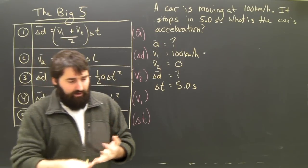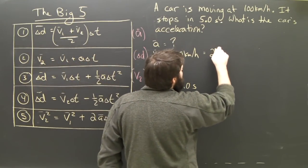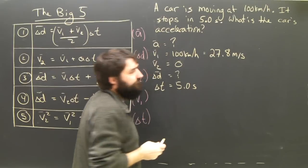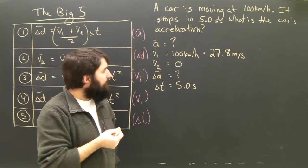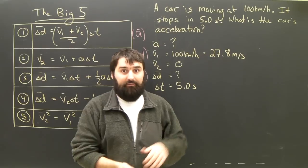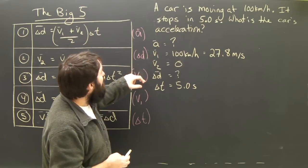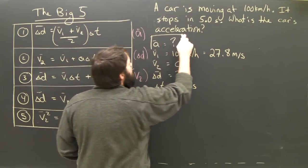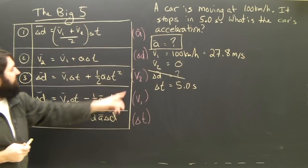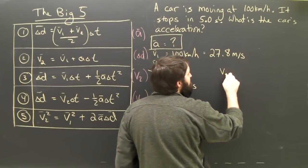100 kilometers an hour divided by 3.6 is 27.8 meters per second. So now at least all of my givens are correct and they're in the same units. I don't know A or D. I'm trying to find A. I don't care at all what D is, which means looking at my big five, I'm going to pick the one without D, which is equation number two.